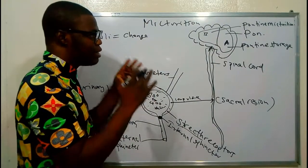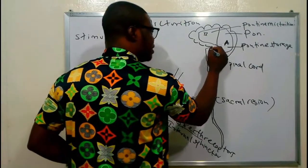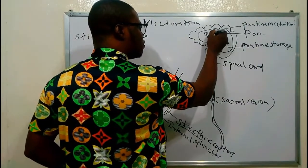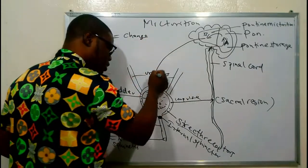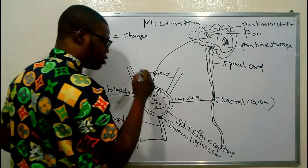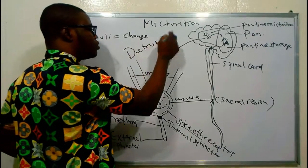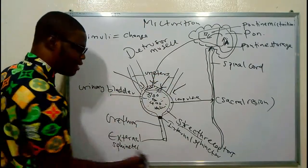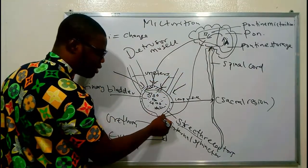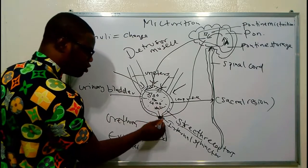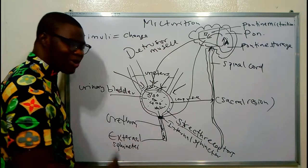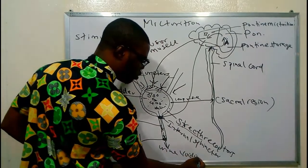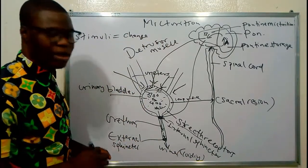When the impulse ascends to the brain, it goes to the pons. If the person is not yet ready to urinate, the impulse goes to the pontine storage center and is stored there. When the person is ready to urinate, it crosses over into the pontine micturition center, which sends an impulse to the detrusor muscle of the bladder, causing it to contract and squeeze. The internal sphincter then receives an impulse to relax, urine flows into the urethra, and with conscious effort the external sphincter relaxes, allowing urination to occur.